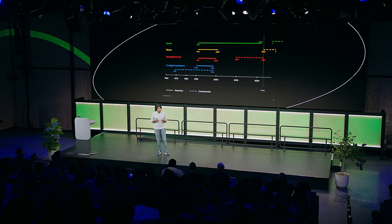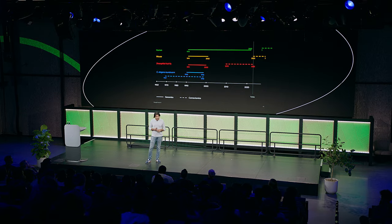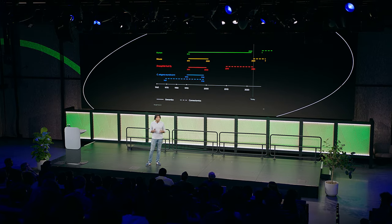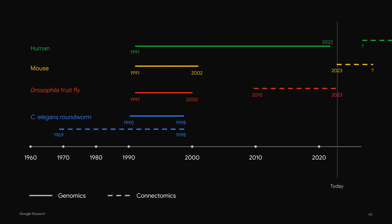If you look at things like mRNA vaccines or new approaches to cancer, these things all rely on a sophisticated understanding of genomes and molecular biology. Connectomics is in a much earlier phase of development, shown here by the dash lines. Mapping a mouse brain, which has 1,000 times more neurons than a fly brain, will drive us to scale our technologies even further and teach us important things about how larger mammalian brains like our own work.